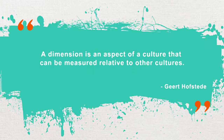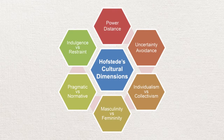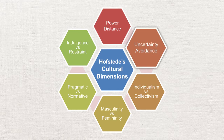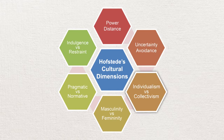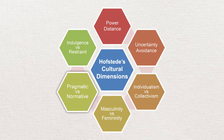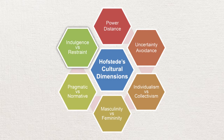According to him, a dimension is an aspect of a culture that can be measured relative to other cultures. In his later research, Hofstede added two new dimensions. The current six dimensions are power distance, uncertainty avoidance, individualism versus collectivism, masculinity versus femininity, pragmatic versus normative, and indulgence versus restraint.